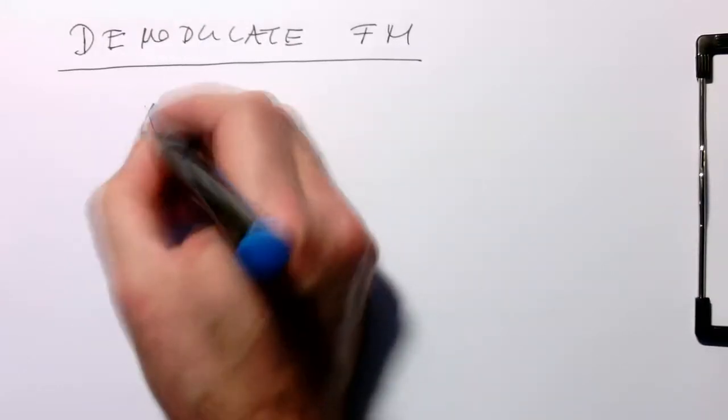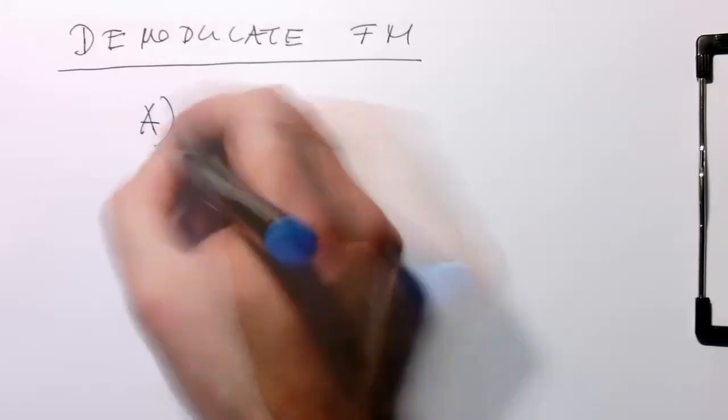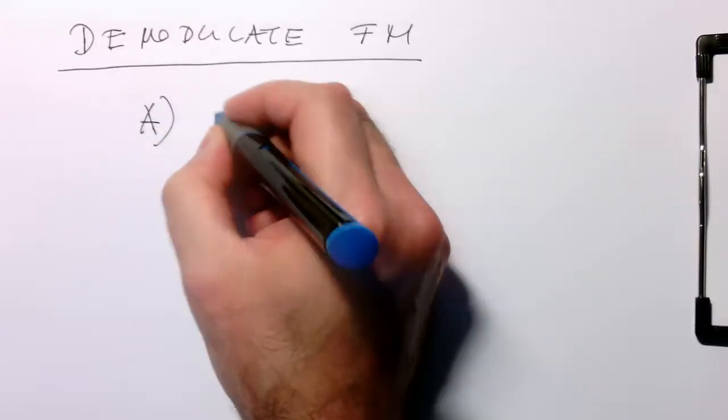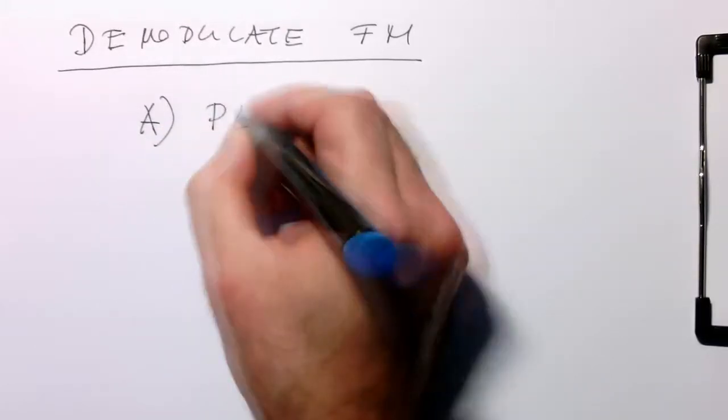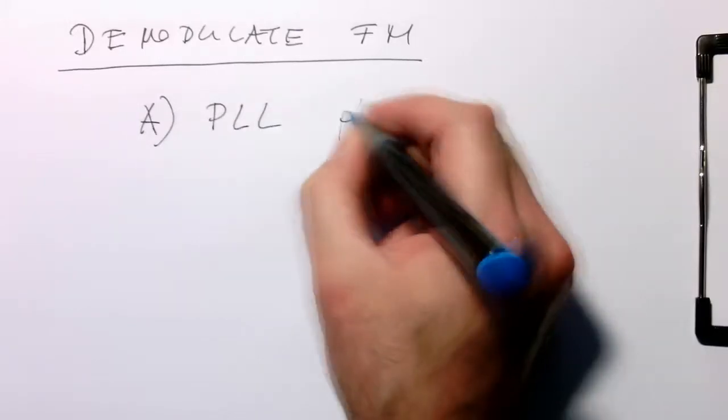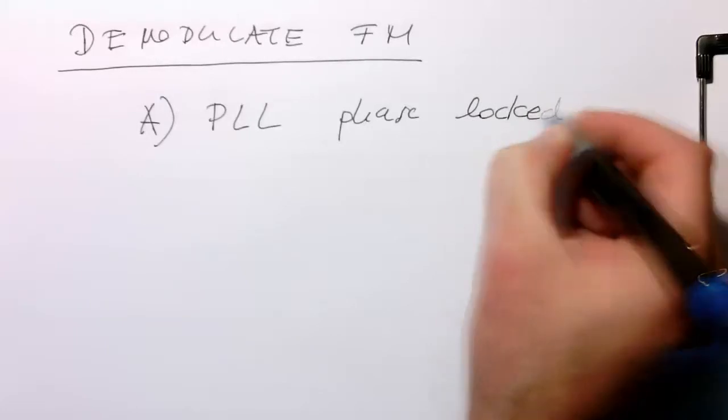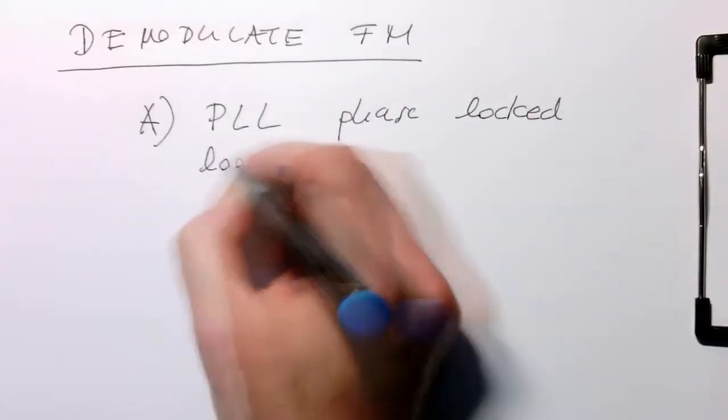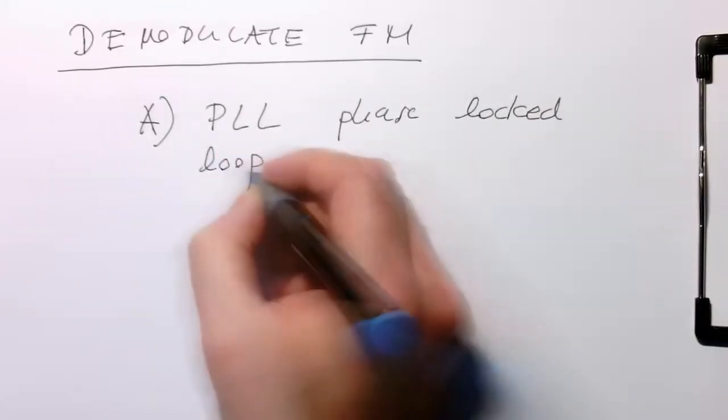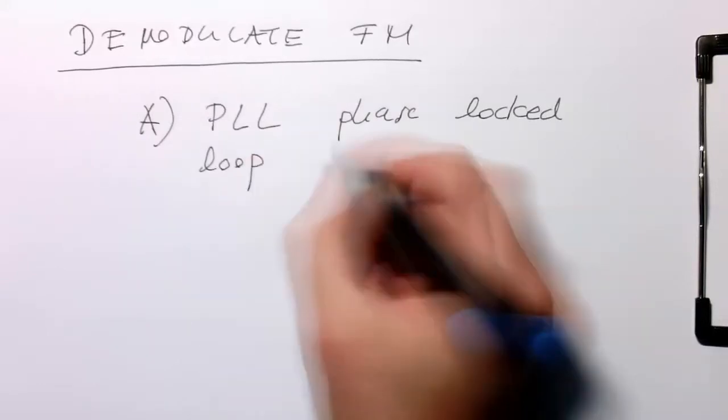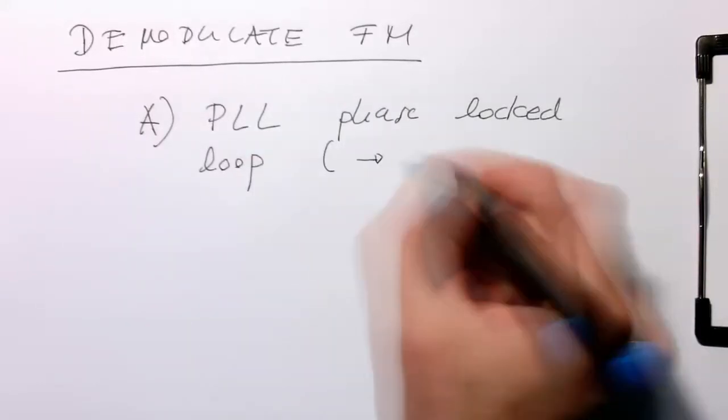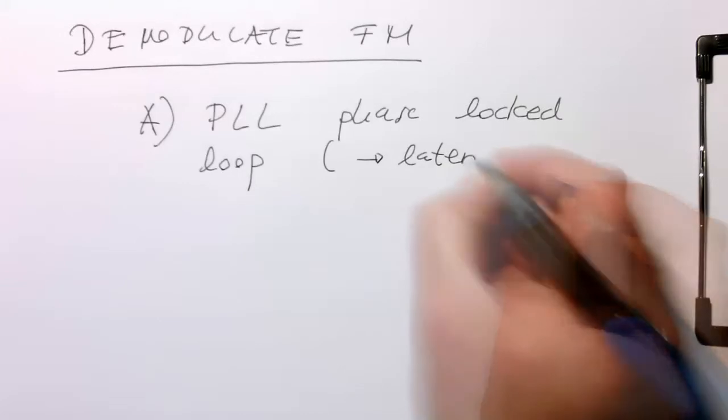If we think of the standard way of demodulating FM in digital systems, this is via a PLL, a phase-locked loop. I'm not going into detail here because this will be dealt with later when we're doing carrier recovery.